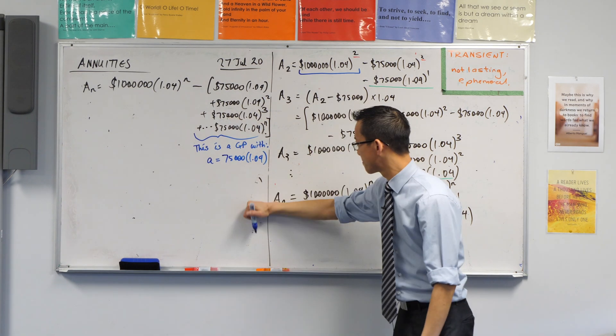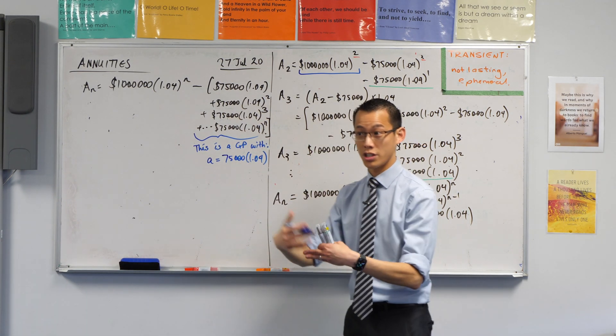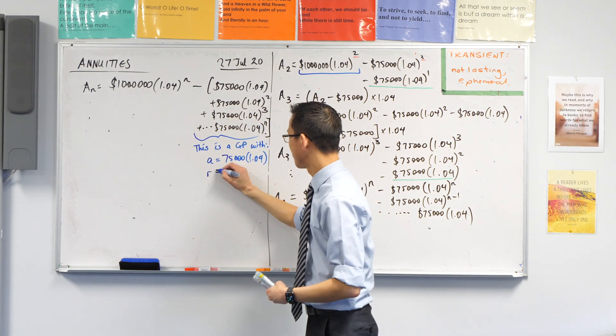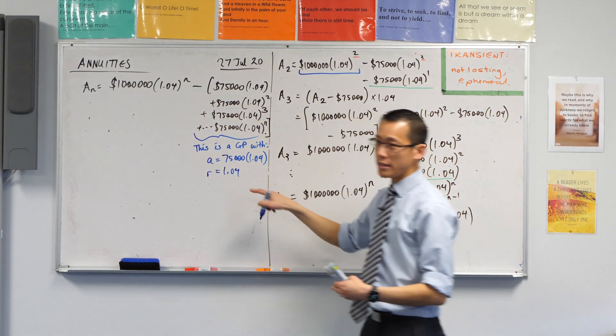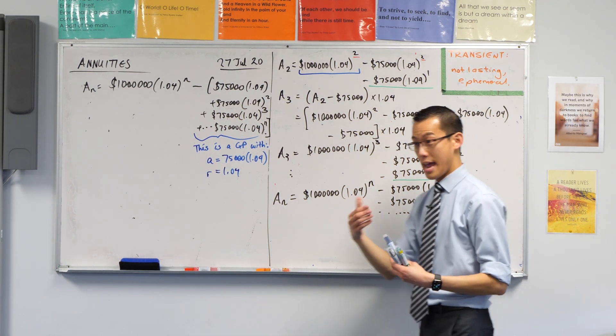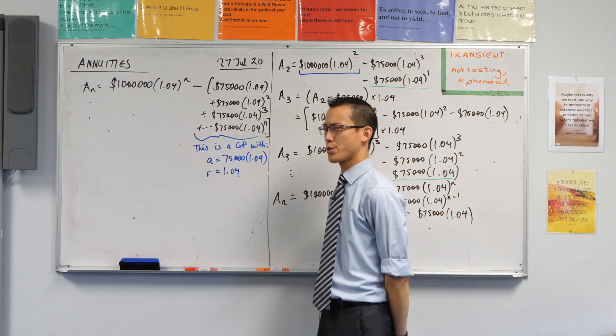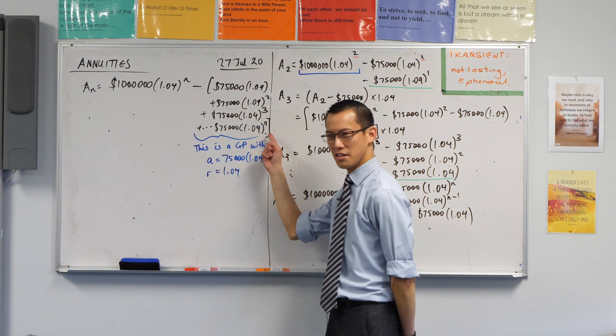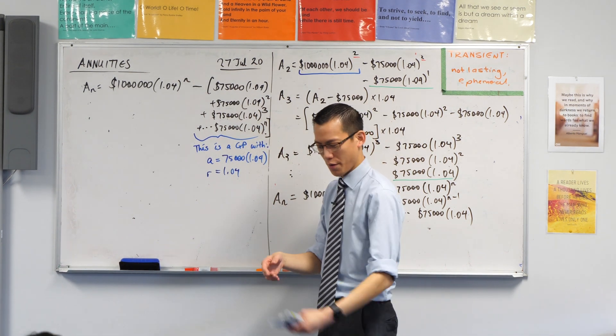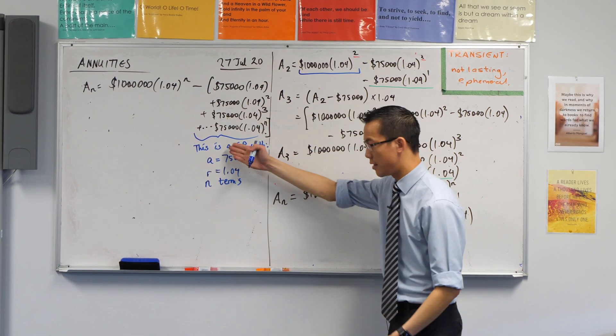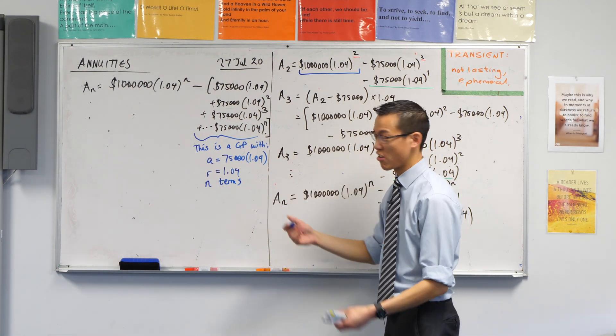What's the ratio? From one term to the next, I'm multiplying by 1.04. Now normally at this point, I would say n equals to tell you how many terms there are, but I don't really want to write n equals n because that seems a bit strange and superfluous. So instead I'm just going to say n terms because this is a GP with this a, this r, and it's got n terms. Is that alright?